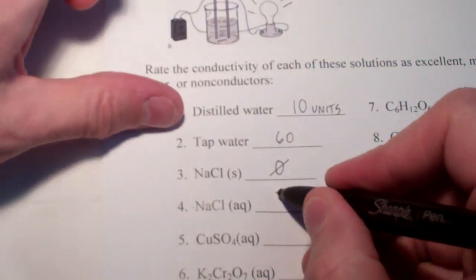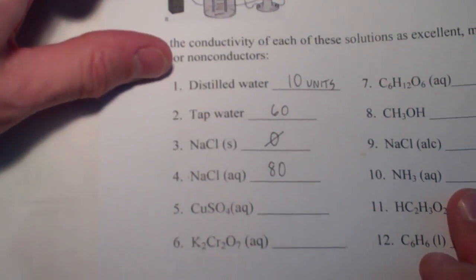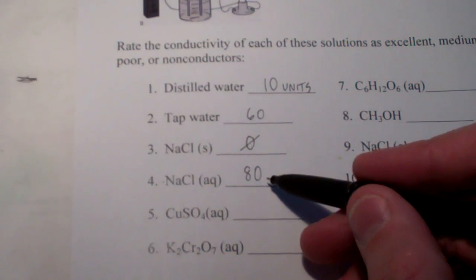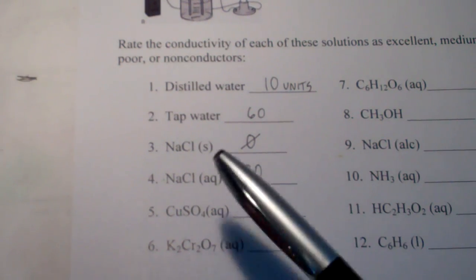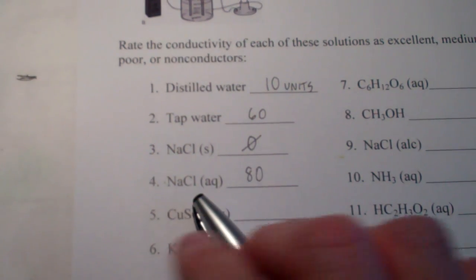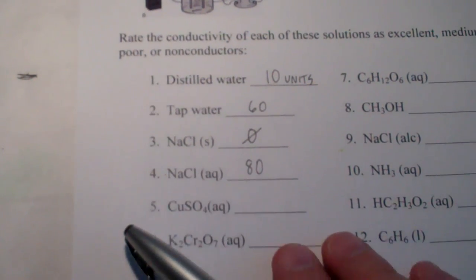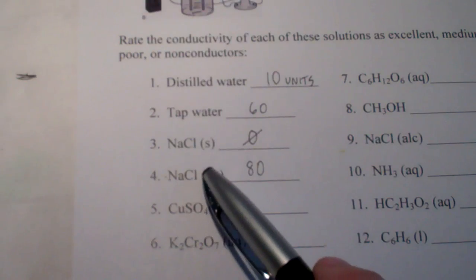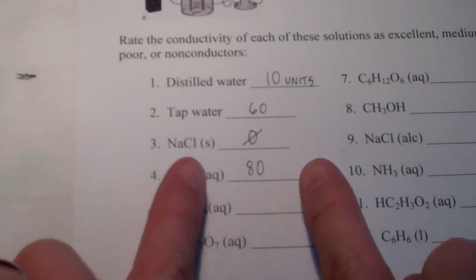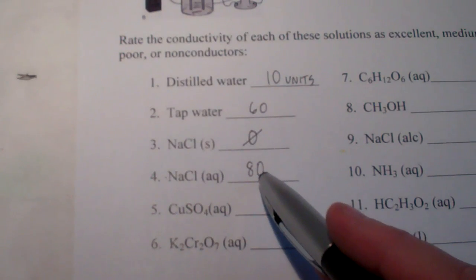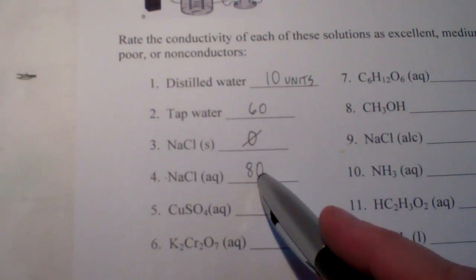So, 80 units for sodium chloride dissolved in water. So, there's something in there that conducts even better than tap water. Now, think about that when sodium chloride dissolves in water from our earlier chapter. Remember that water molecules can surround the sodium and the chloride ions and pull them away from each other. So, we have ions in solution there, and I wonder if that might be the cause of our conductivity.